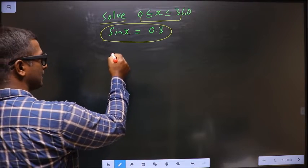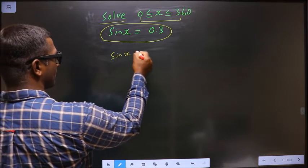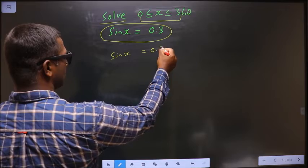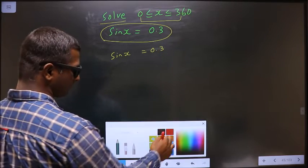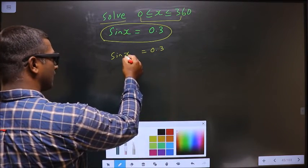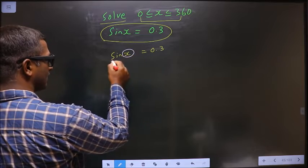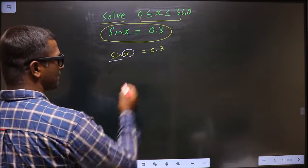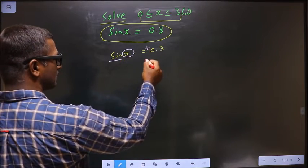First, the given equation is sin x equals 0.3. Now, to get the values for x, here we have sin and it is positive.